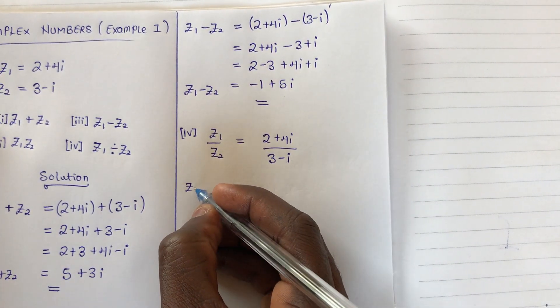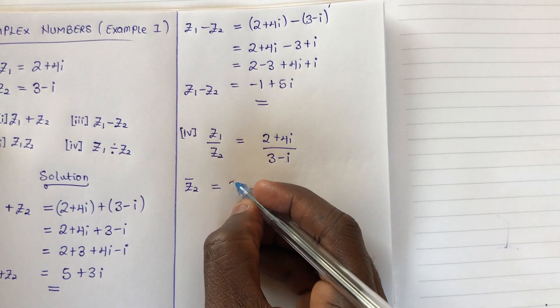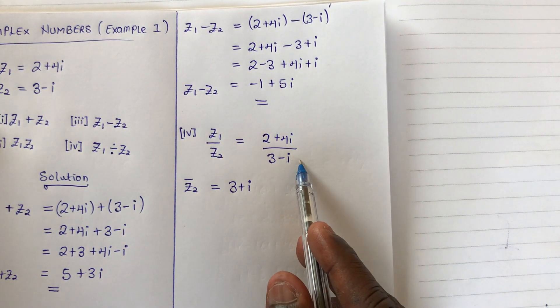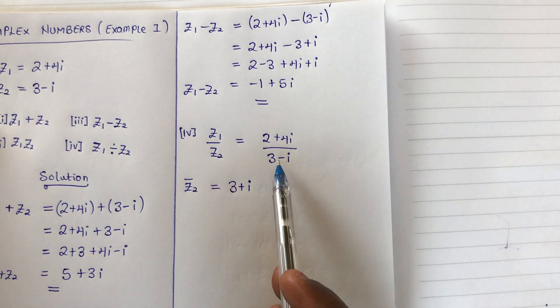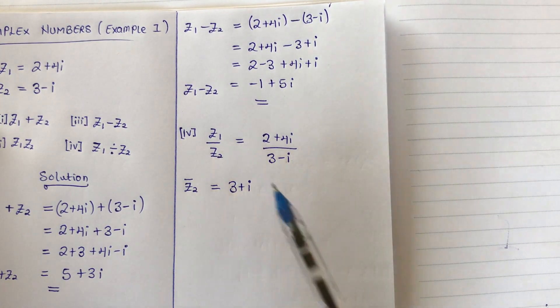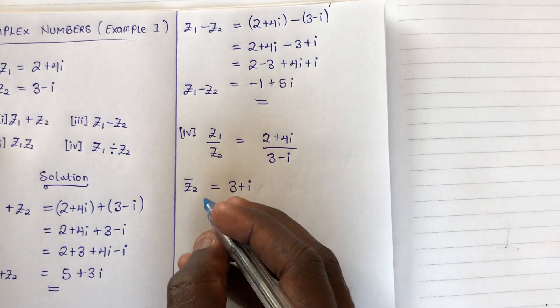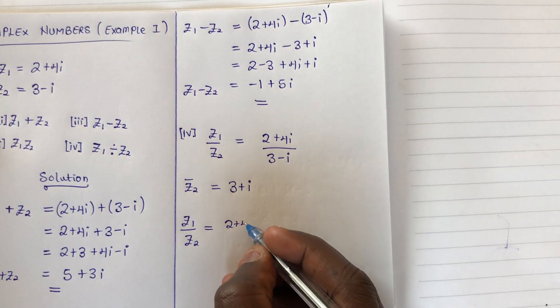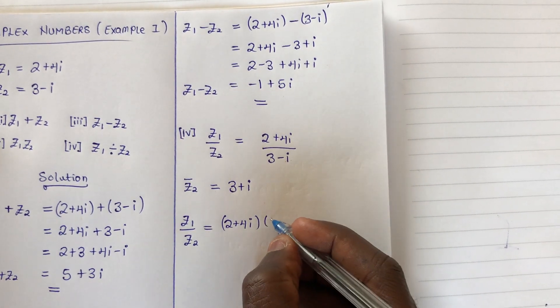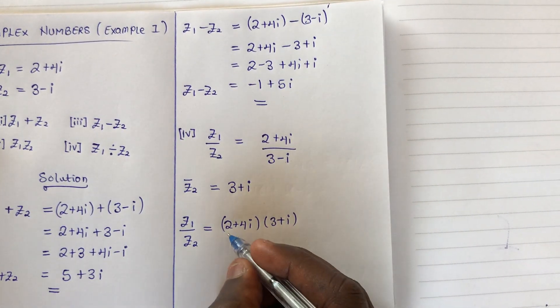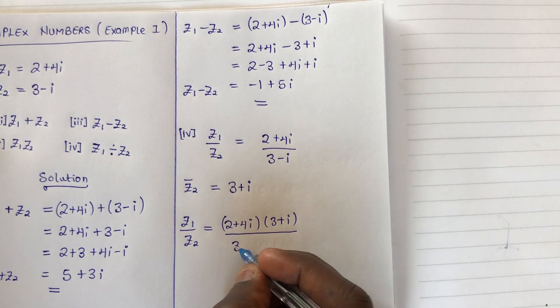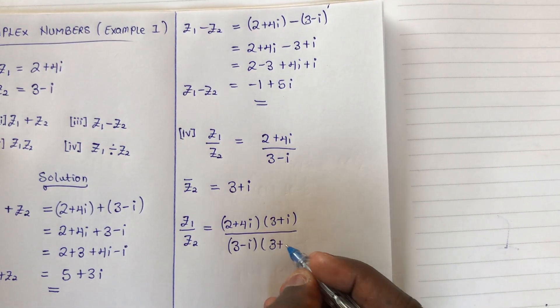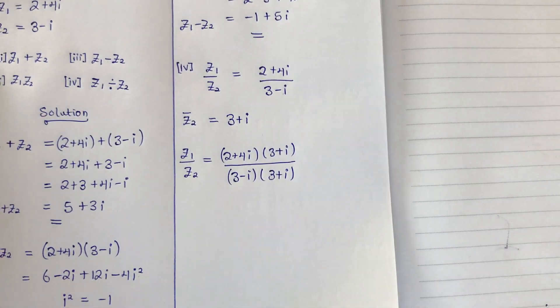The conjugate of z2 is z̄2 = 3 + i. Remember, if the sign is positive, the conjugate will be negative, and if negative, it will be positive. So z1/z2 = [(2 + 4i)(3 + i)]/[(3 - i)(3 + i)].